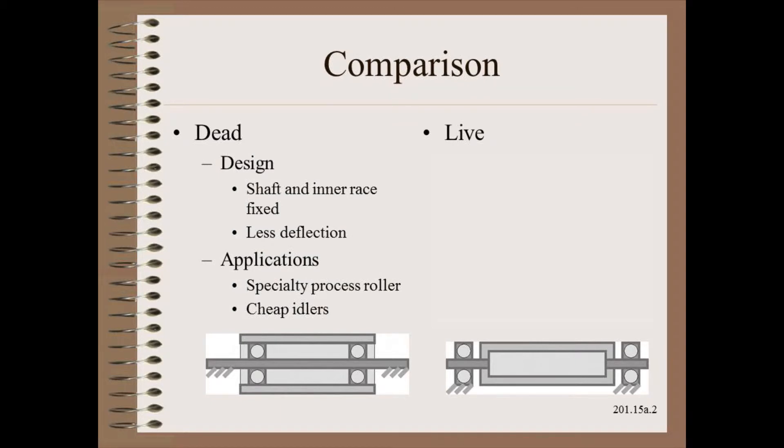Also, there are some unusual designs of dead shaft roller for specialty applications that are extremely expensive. These are where the shell is intentionally distorted by hydraulic shoes that push against a mass of central mandrel. These are known as control crown rolls or shoe presses, though the results are more accurately termed multi-point deflection control.